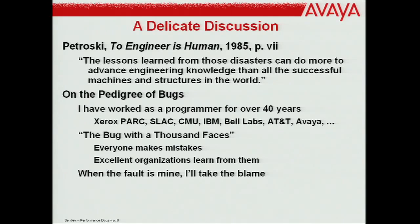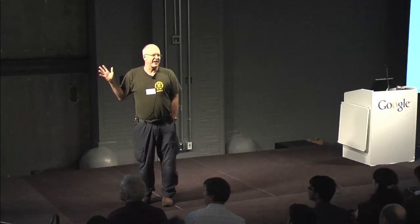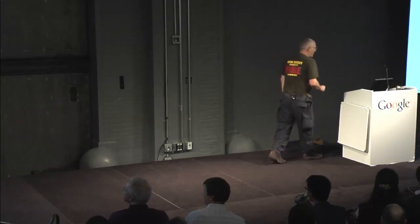If you're a programmer, you've probably written code along these lines: count is initialized to zero; somewhere later it's incremented with count++; if count is bigger than 100, do something expensive; then reset count to zero. There are three lines of code there, and there are possibilities to make mistakes in each one. What mistakes could you make, and what impact would that have?